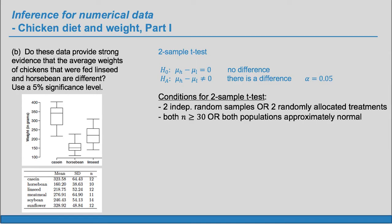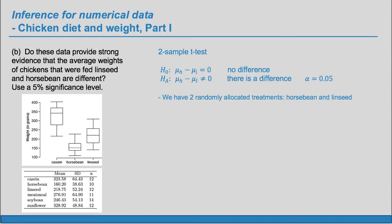Conditions for the two sample t-test, we need two independent random samples or two randomly allocated treatments. We also need that both sample sizes are at least 30 or both populations approximately normal. The first condition is definitely met we have two randomly allocated treatments. It was stated at the beginning of the problem that these treatments were randomly allocated.